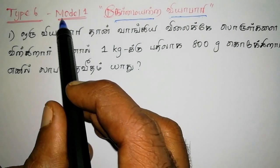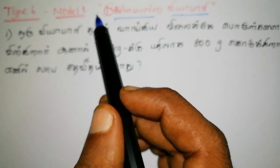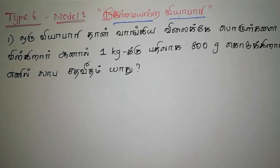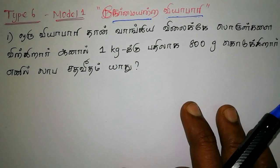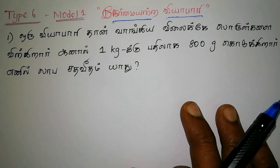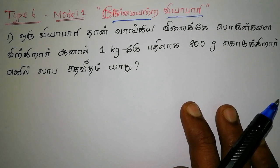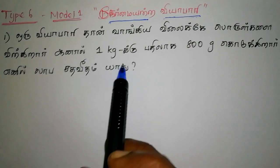There are two models. If you want to talk about the first model — the first model is one model, and the second model is a small model. Let's start with the first model.